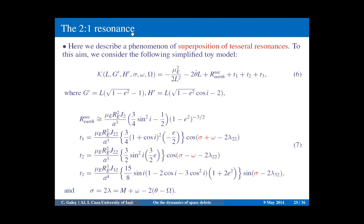Now let's see what happens in the case of the 2-to-1 resonance, which is much more complex. I'd like to describe a phenomenon called superposition of tesseral resonances. We consider a simplified toy model which reproduces the main dynamical features of the 2-to-1 resonance, including the secular part with just J2 and three dominant terms T1, T2, and T3. Note that T1 and T2 are of order J22 and T3 is of order J32. The arguments of these harmonics are sigma plus omega, sigma minus omega, and sigma, where sigma is the resonant angle.